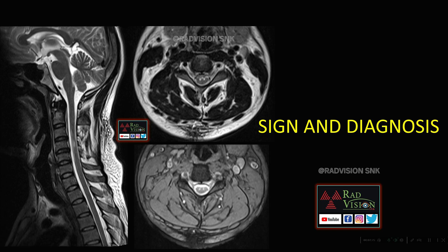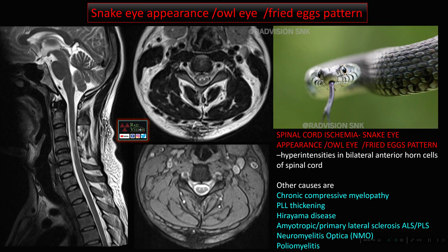Next case — guess the sign and diagnosis. This is a sagittal T2 weighted image of the cervical spine showing hyperintense signal in the center of the cord. On axial T2 weighted and GRE images, two hyperintense areas are clearly seen predominantly in the anterior columns of the spinal cord. This mimics the appearance of a snake eye — classically called the snake eye appearance, or owl eye appearance, or fried egg pattern.